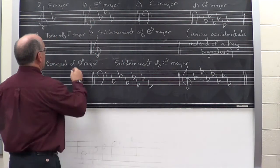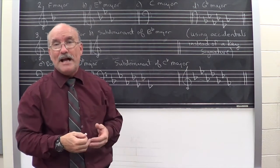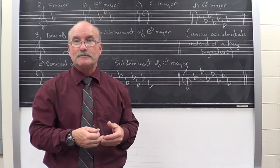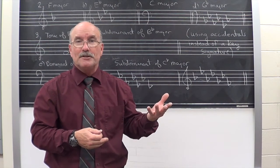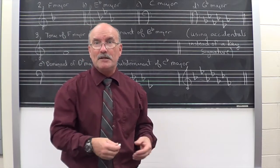So here, tonic of F major. Well, that's pretty simple. It's F. That's where it gets its name. What's the tonic of B flat major? B flat. What's the tonic of F sharp major? F sharp. It means, what's the first note? Well, the first note is what the name of the key is.